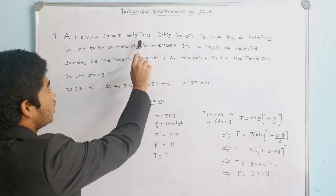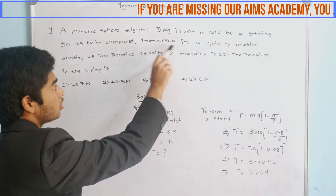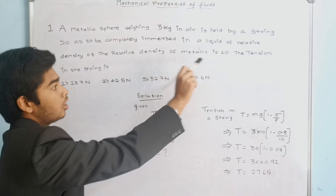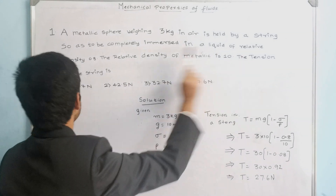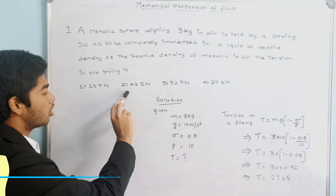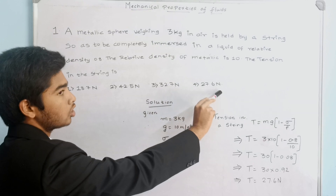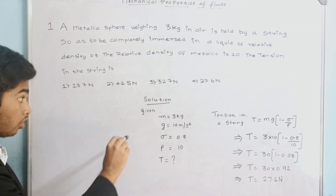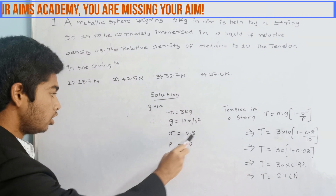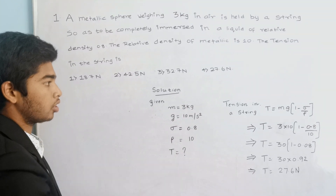The question: a metallic sphere weighing 3 kg in air is held by a string so as to be completely immersed in a liquid of relative density 0.8. The relative density of the metallic sphere is 10. The tension in the string is — options: 18.7 N, 42.5 N, 32.7 N, or 27.6 N. Given values: m = 3 kg, g = 10 m/s², σ = 0.8, ρ = 10, and T is the unknown.